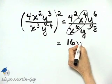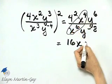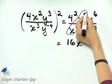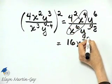That's x raised to the power of 4 minus 6. What is 4 minus 6? That is negative 2.